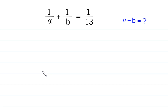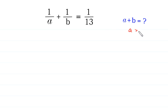Hello, welcome to how to solve this very nice equation. 1 over A plus 1 over B is equal to 1 over 13, and we need to find the value of A plus B, where A is greater than 0 and B is greater than 0.